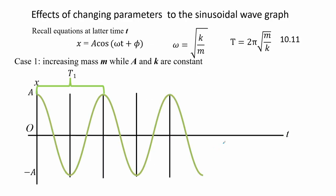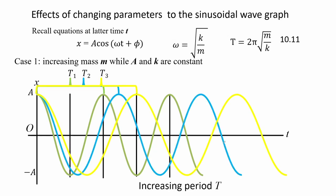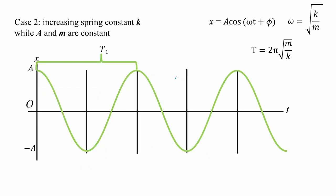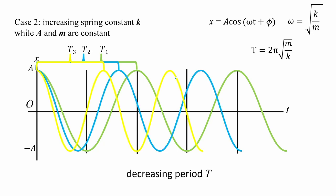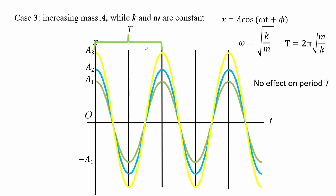Now let us examine what happens to the graphical representation of the wave when we alter its parameters. First, increasing the mass causes the period to increase. In the second case, increasing the spring constant causes the period to decrease. Lastly, increasing the amplitude A only increases the amplitude and does not affect the period at all.